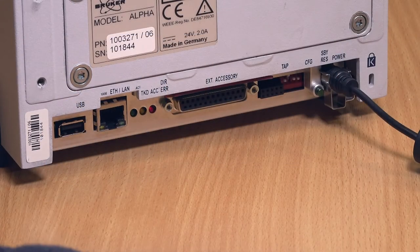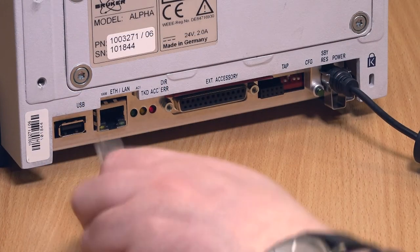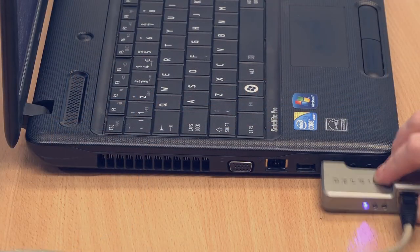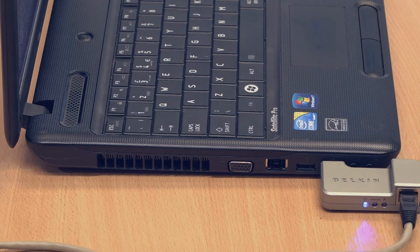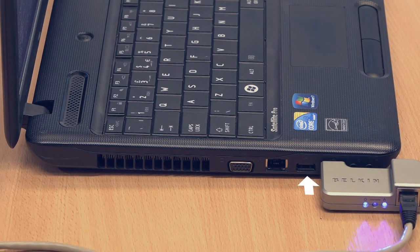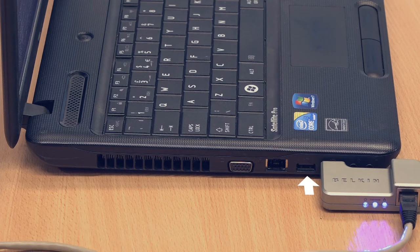Connect the ethernet cable to the rear of the spectrometer as shown, and the other end of the cable plus its adapter into the front USB port of the laptop. This ensures you can access the other USB port to plug in the mouse.